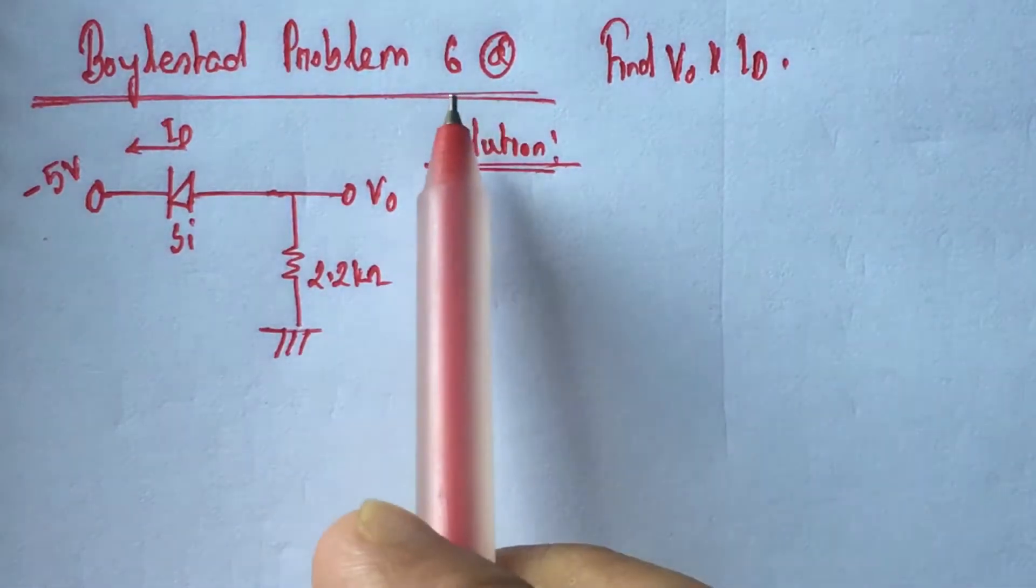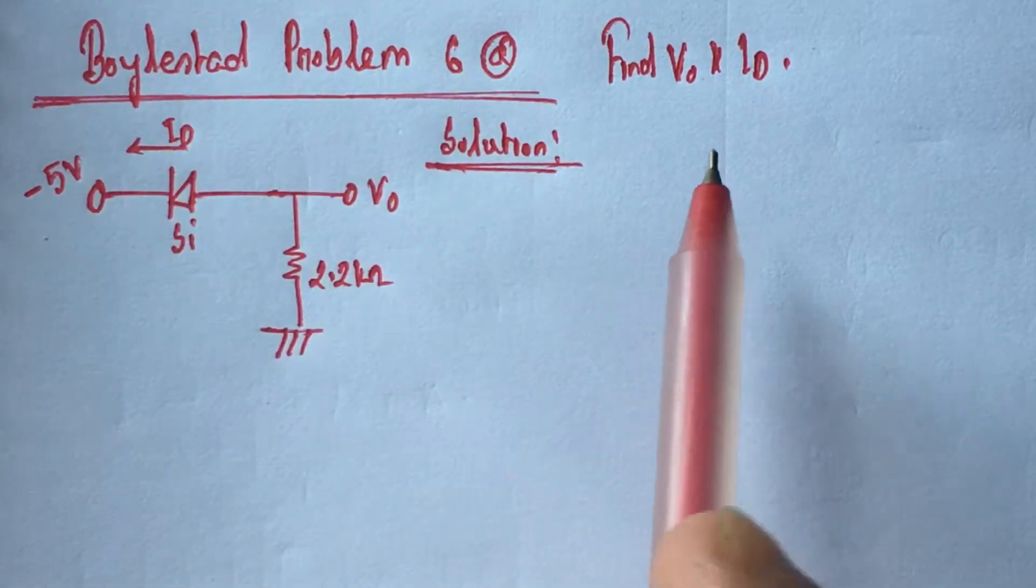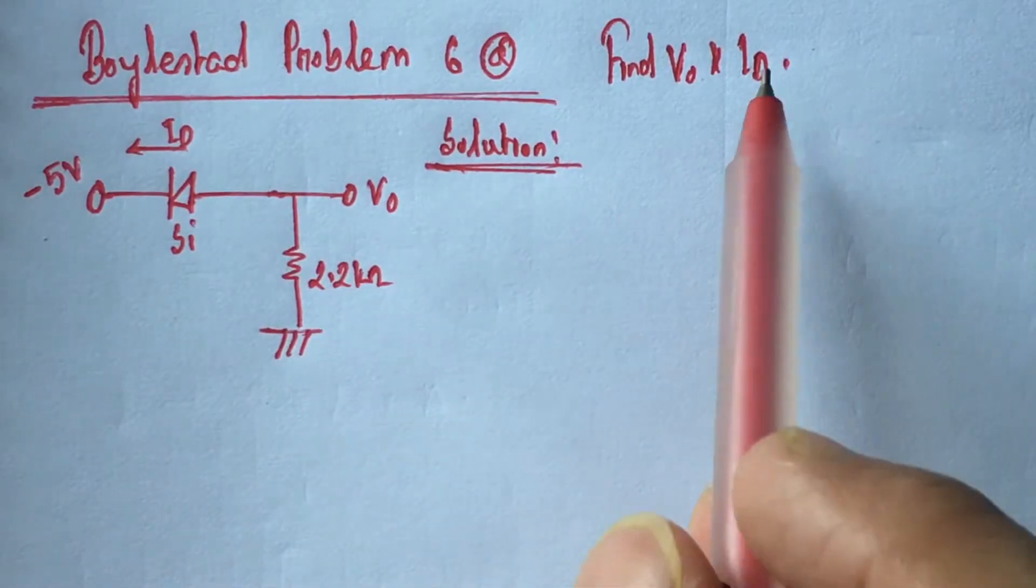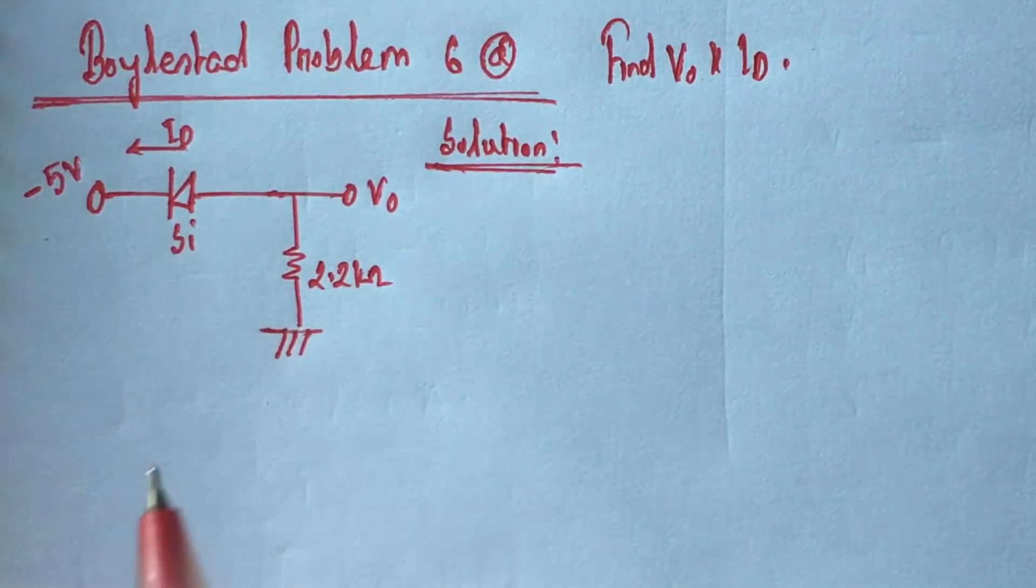Hi viewers, today we will solve problem 6A from Boyle State. Here we have to identify the voltage V0 across the 2.2 kilohm resistance and the current ID flowing through this diode.